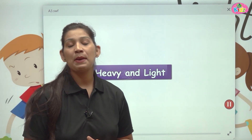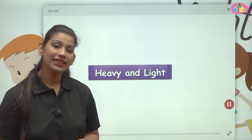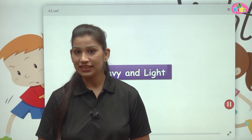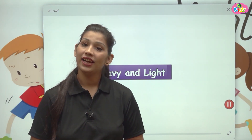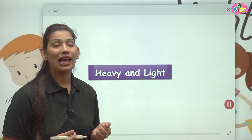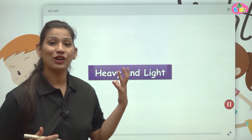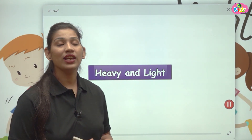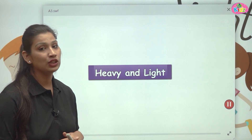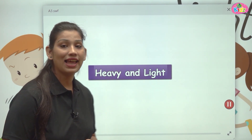Heavy ka matlab hota hai bhaari — heavy means heavy. Light ka matlab hota hai halka — light means light. The things you cannot pick up and need a lot of effort to pick up are called heavy. Unhain hum bhaari kehte hai. The things you can easily hold are called light.